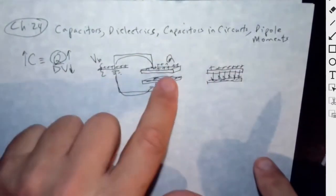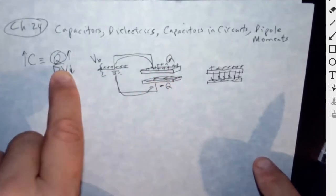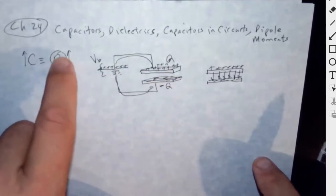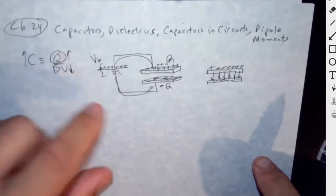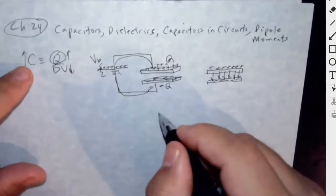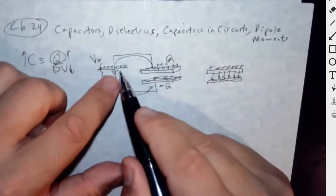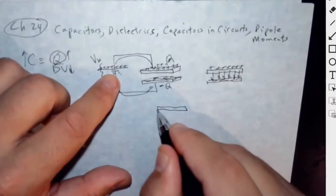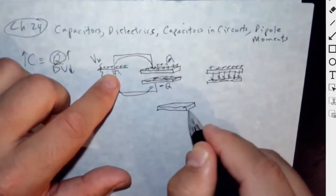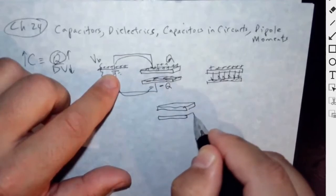The less voltage required to give it a big charge, the bigger the capacitance is. In other words, if you had a bigger capacitor, you wouldn't require a very big battery and you would still have a lot of charge stored.